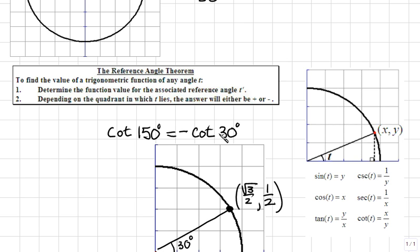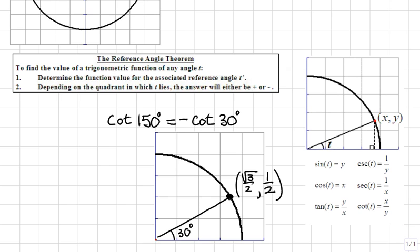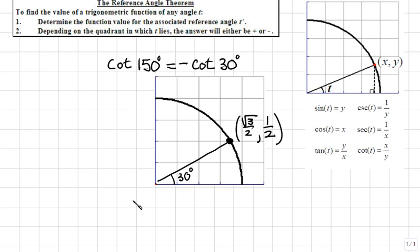we can now use cotangent of 30 degrees to find x over y. So, this will become cotangent of 150 degrees becomes negative cotangent is x over y, which will be the x value of √3 over 2 over the y value of 1 half.